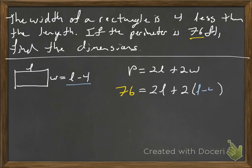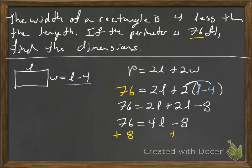We're going to go ahead and do the distributive property. 76 equals 2L plus 2L minus 8. We're going to combine our like terms. 76 equals 4 lengths minus 8. We'll add 8 to both sides. Well, 4 lengths is equal to 84. We'll divide by 4, and the length will be 21.